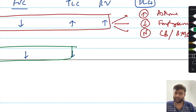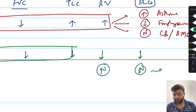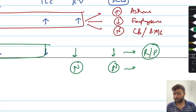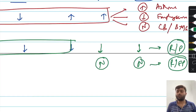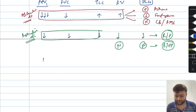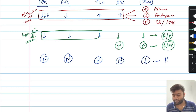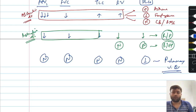Restrictive disorders are of two types — parenchymal or extraparenchymal. If residual volume is decreasing and so is DLCO, it is a restrictive parenchymal type of disorder. Whereas if residual volume is normal and DLCO is also normal, it is a restrictive extraparenchymal disorder. Lastly, for pulmonary vascular diseases, if all pulmonary function testing is normal except for DLCO which is decreased, you should think of a pulmonary vascular disease.